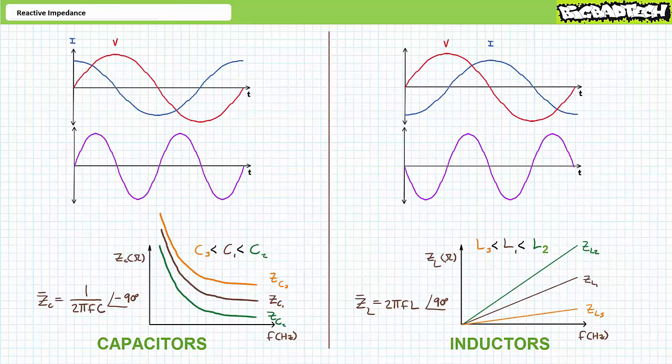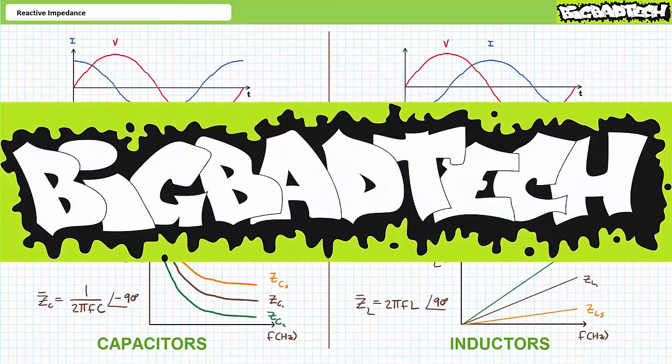That is that. In conclusion, this lecture examined impedance experienced by reactive elements like capacitors and inductors at a conceptual level. We discussed why there exists a phase shift between voltage and current for reactive elements and how frequency and component magnitude influence reactive impedance. Remember to review these concepts as often as you need to really drive it home. Thank you very much for your attention and interest. I'll see you again during the next lecture of our series. Remember to tell your lazy lab partner about this resource and be sure to check out the Big Bad Tech channel for additional resources and updates.